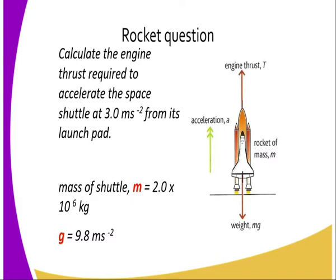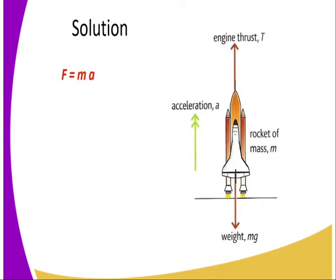Remember, F = MA. The gravitational field strength, g, is 9.8. So the solution to our question becomes F = MA, where the force is the thrust minus the weight.